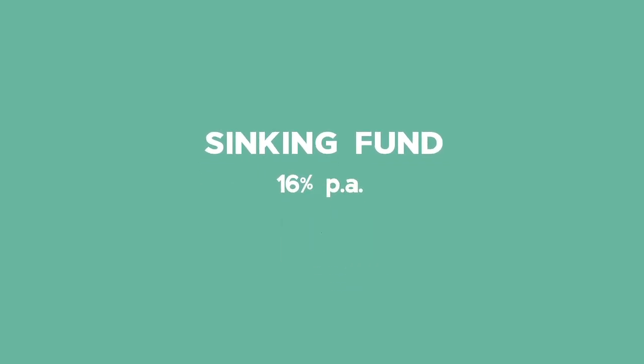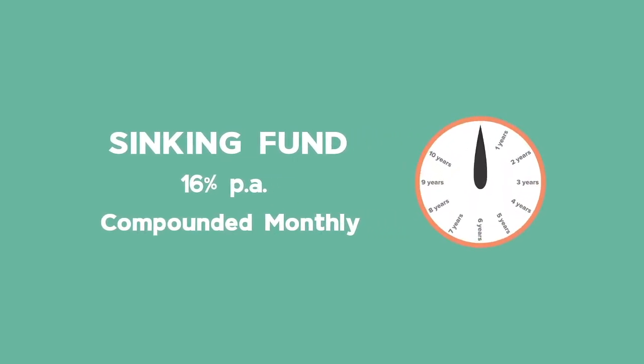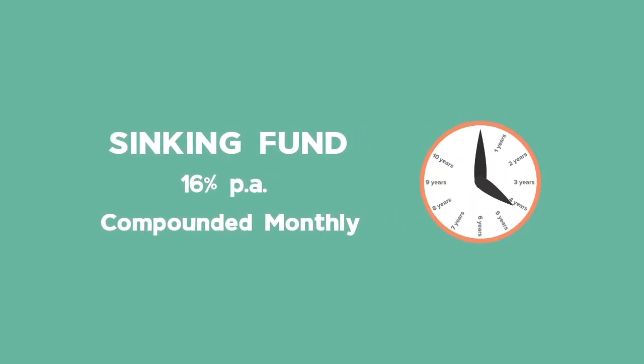The sinking fund pays 16% per annum compounded monthly, and monthly payments are made into this account for 10 years, starting immediately and ending one month before the purchase of a new machine.